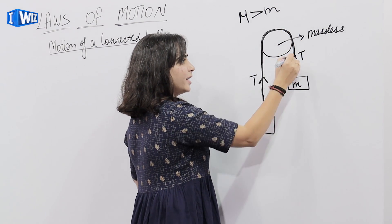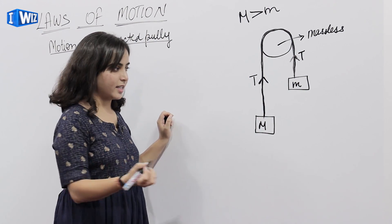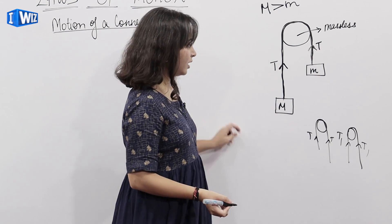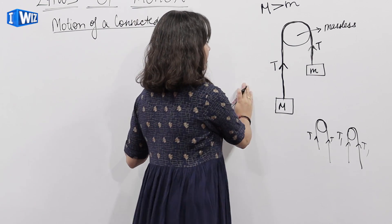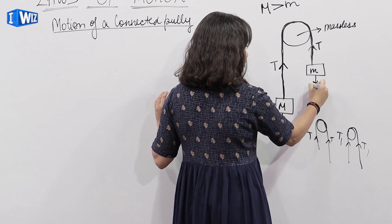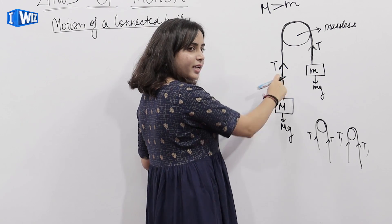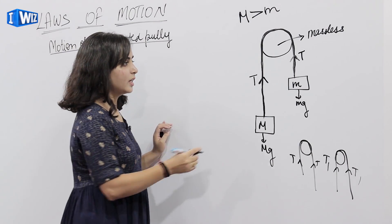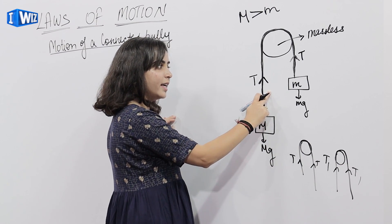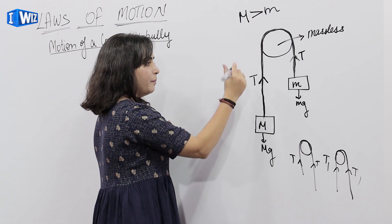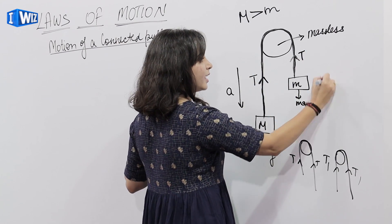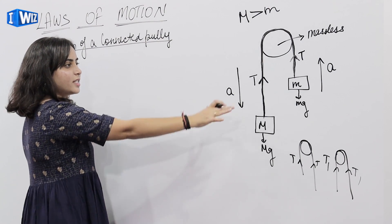अब यह भी T है, यह भी T है — but हमें देखने में दो अलग-अलग threads लग रहे हैं तो इनमें एक tension कैसे हो सकती है? देखने में ये दोनों चीज़ें अलग लग रही हैं लेकिन practically यह thread same है which is connecting two masses. अगर thread same है तो tension भी same रहेगी. अगर दो different threads हों तो tension T1 और T2 अलग होती — same thread, same tension. Now देखते हैं forces कौन-कौन सी act कर रही हैं — MG, small mg. Capital M is greater than small m, so acceleration downward होगा इस path में और upward इस path में.